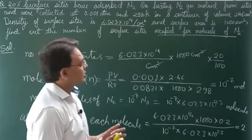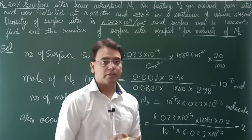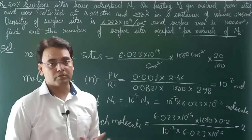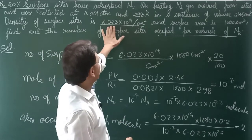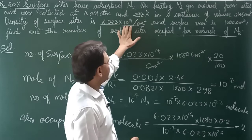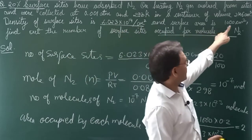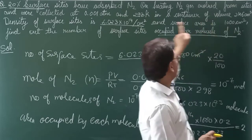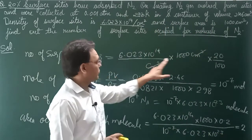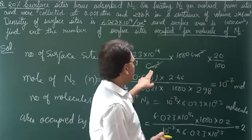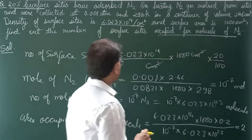You see, this means total surface area is divided by total number of molecules. Now total surface area will be: 6.023×10¹⁴ per cm². And here we have area given as 1000 cm². We'll multiply these. So look, this is multiplied. cm² and cm² cancel out. This means these are the total surface sites.